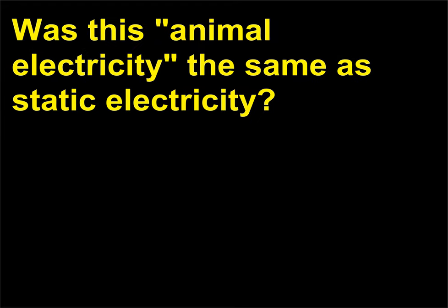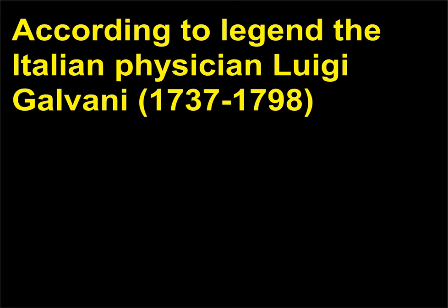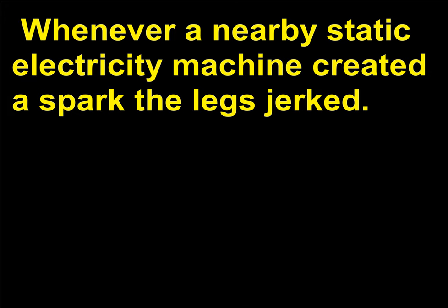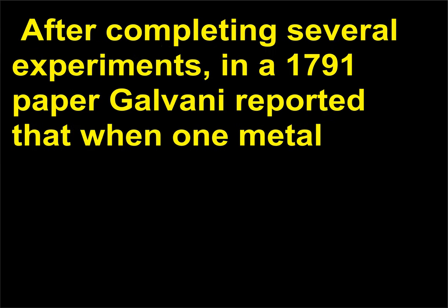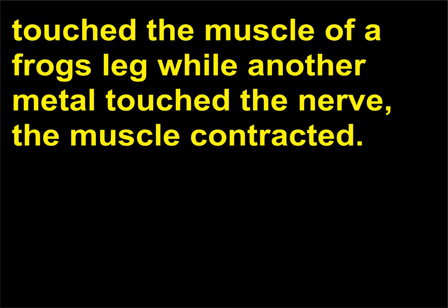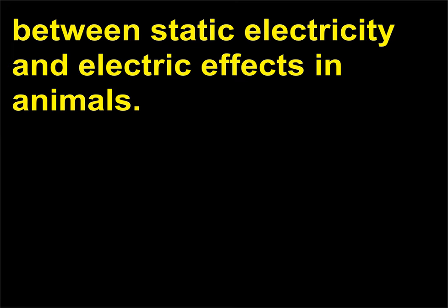Was animal electricity the same as static electricity? Galvani (1737–1798) was making frog leg soup for his sick wife when, whenever a nearby static electricity machine created a spark, the legs jerked. After completing several experiments, in a 1791 paper Galvani reported that when one metal touched the muscle of a frog's leg while another metal touched the nerve, the muscle contracted. Thus Galvani helped to show that there was a connection between static electricity and electric effects in animals.